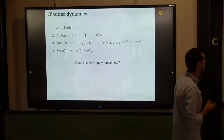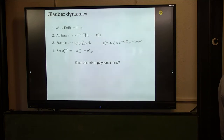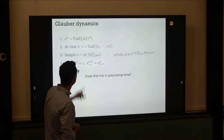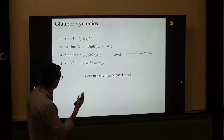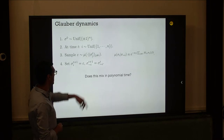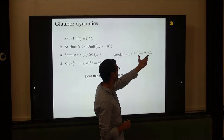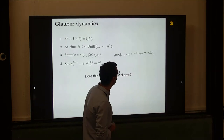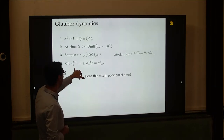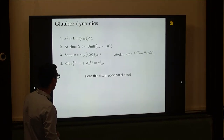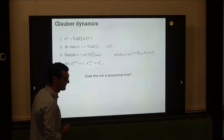The first thing you can try is global dynamics: start from a uniform configuration, each time sample one coordinate at random and update it via its conditional distribution — fix everybody except the i-th coordinate. This is an easy step via a cavity field introduced here. Each step is easy, but you'd like to know whether this Markov chain mixes quickly.